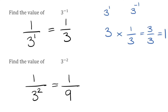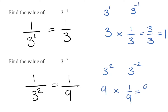Checking it: 3 to the power of negative 2 means it's the inverse or reciprocal of 3 squared. We know 3 squared is 9, so the inverse of 3 to the power of 2 is 1 over 9. Multiplying these together gives 9 over 9, which equals 1.